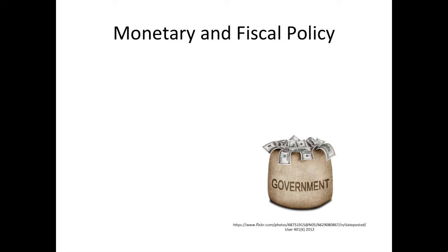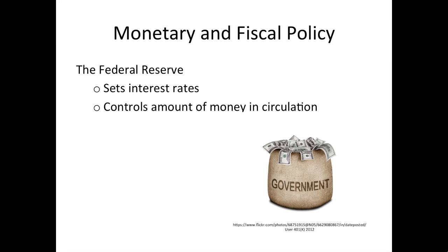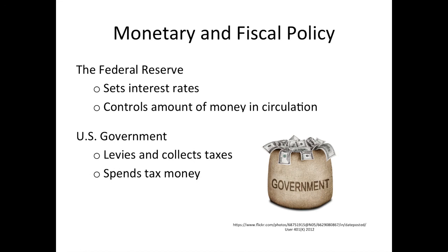Since the US is a free market economy, no one, including the government, has full control over it. But there are some tools that can influence things. These tools fit into two categories. The first is monetary policy. The Federal Reserve, or the Fed as it's called, controls how much money is in circulation and what the standard interest rates are. It can use these powers to manipulate inflation rates and encourage spending. Fiscal policy refers to the government's powers of taxing and spending, which can also be used to influence people's spending habits.